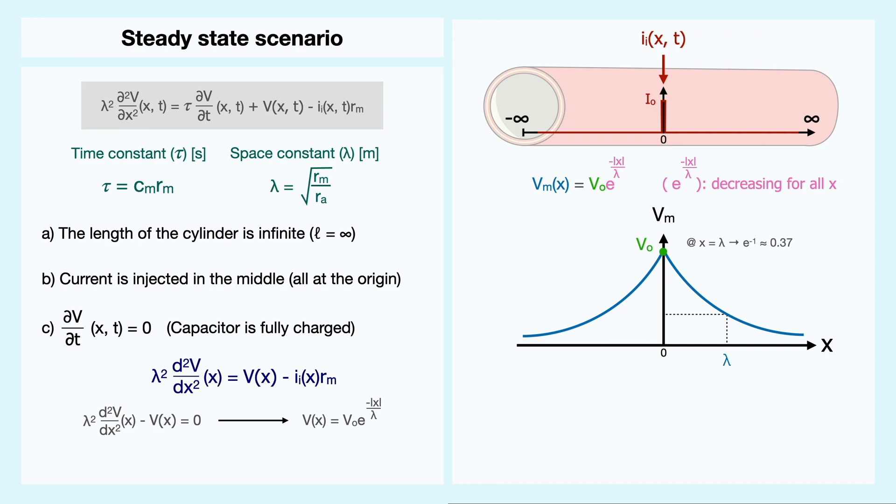When you are at a position equal to lambda, you are at a position where the membrane potential has decayed to 1 over e of its value, which is about 37%. Thus, the space constant gives a measure of how far the disturbance in VM extends from the site of current injection.